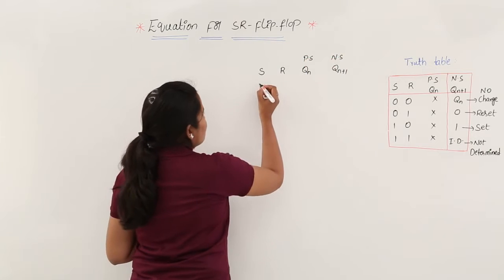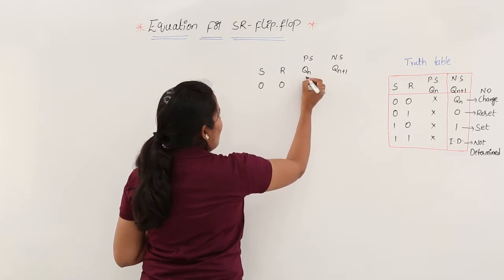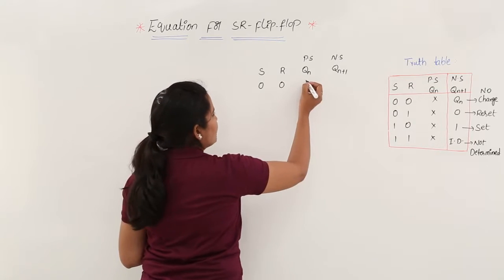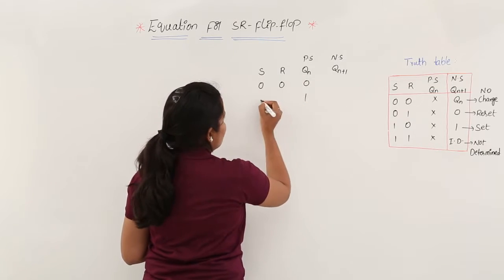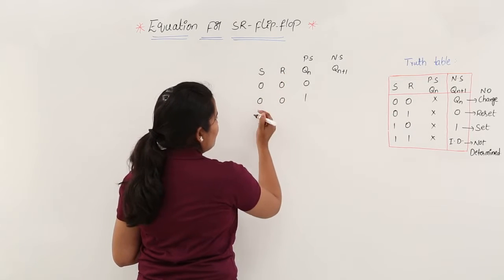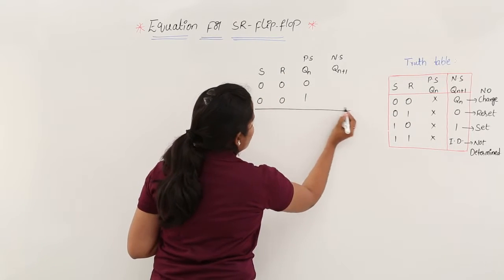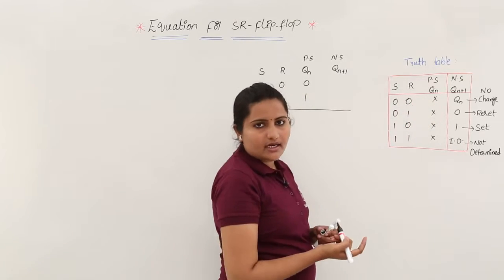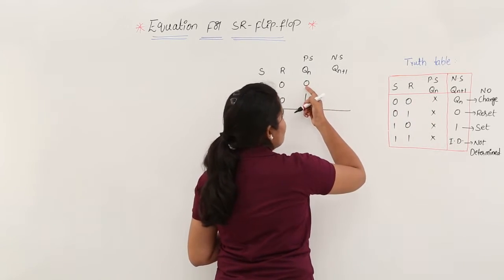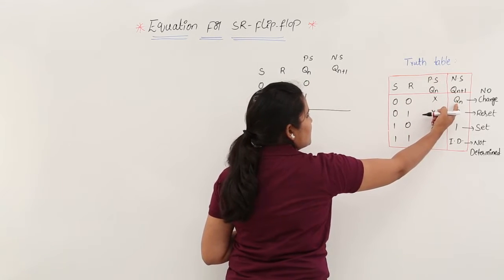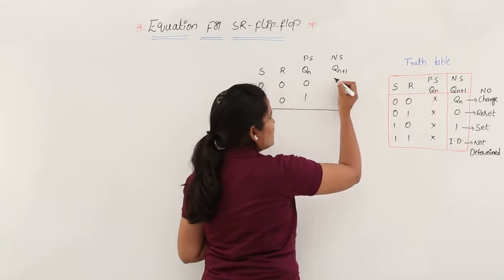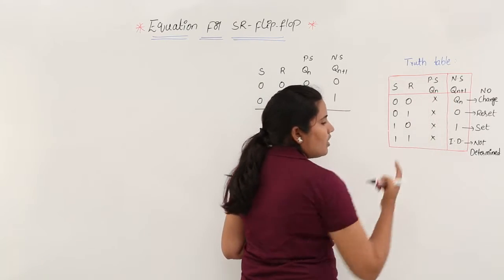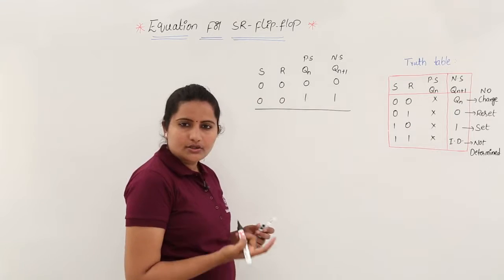With SR equal to 0,0, QN may be either 0 or 1 — I am elaborating the do-not-care conditions. If QN equals 0, then QN+1 equals QN, meaning you get the same 0. If QN equals 1, you get the same 1. This is the meaning of QN+1 equals QN.